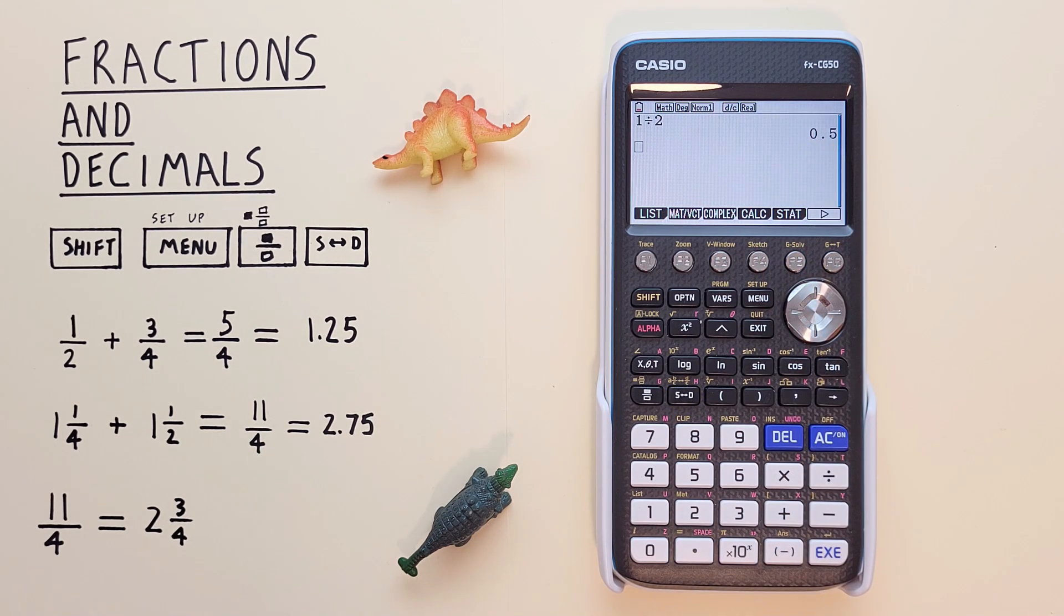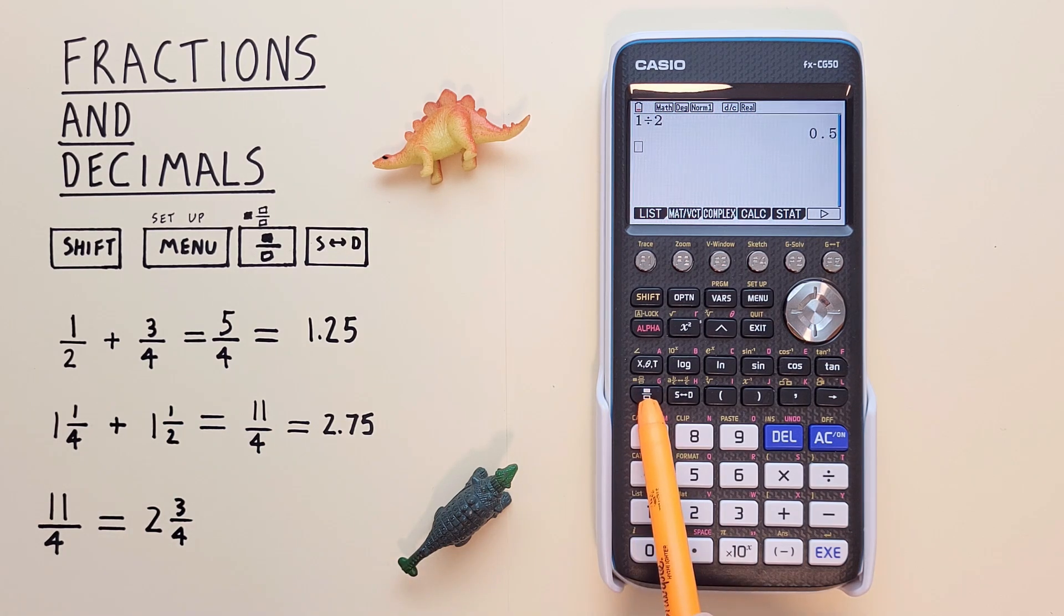But what if we're given numbers as a fraction and want to enter them that way, as part of an equation, say, 1 over 2 plus 3 over 4 equals? Well, to do that, we use the fraction key.